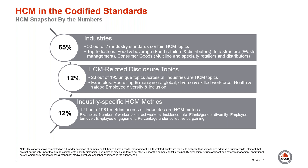The purpose of this analysis was to illustrate at the disclosure topic and metric level where human capital appears. Out of the 77 industries that SASB covers, the issue of human capital appears in 65% of all industries. Out of 195 unique disclosure topics, human capital related issues are addressed in 12% of all disclosure topics. And out of 981 metrics, human capital related metrics appear in 12% of all of SASB's metrics.